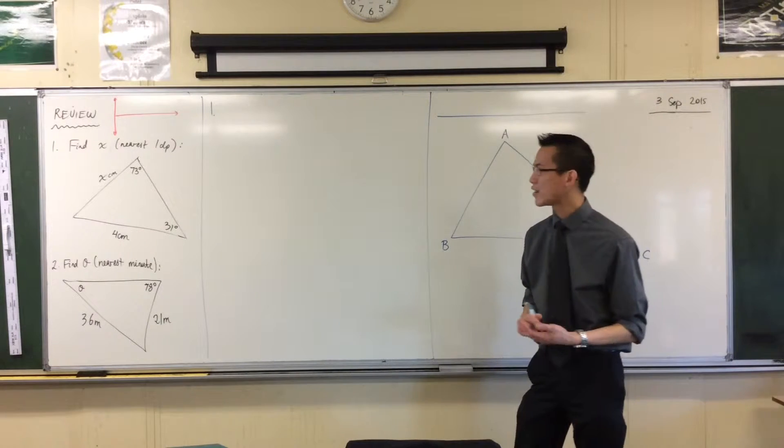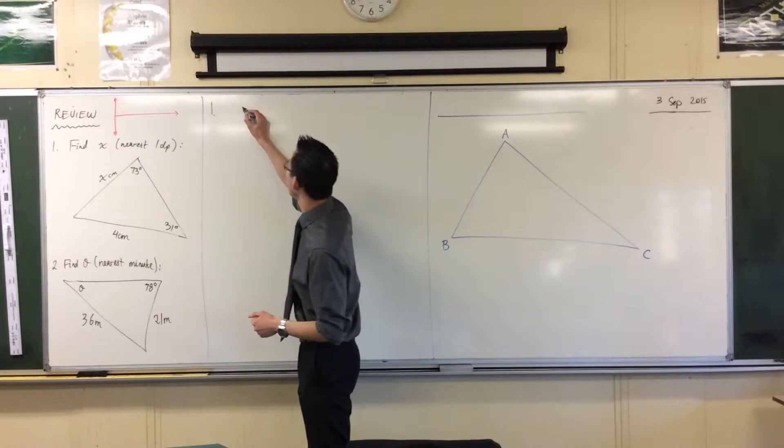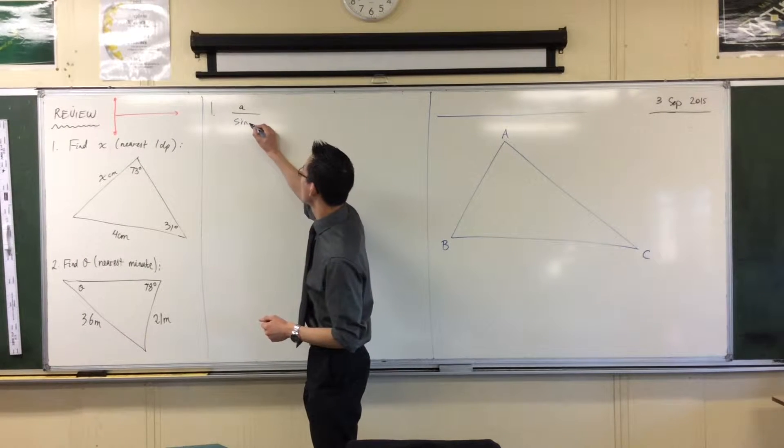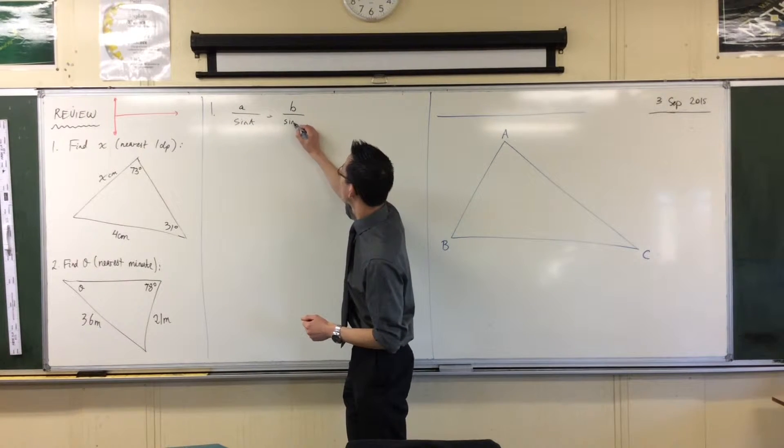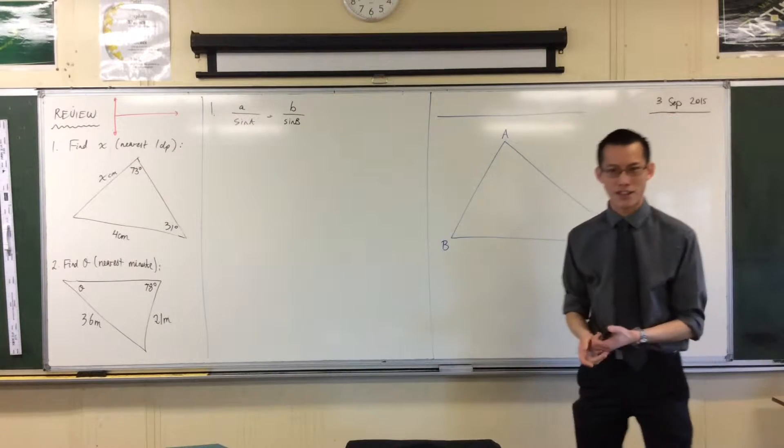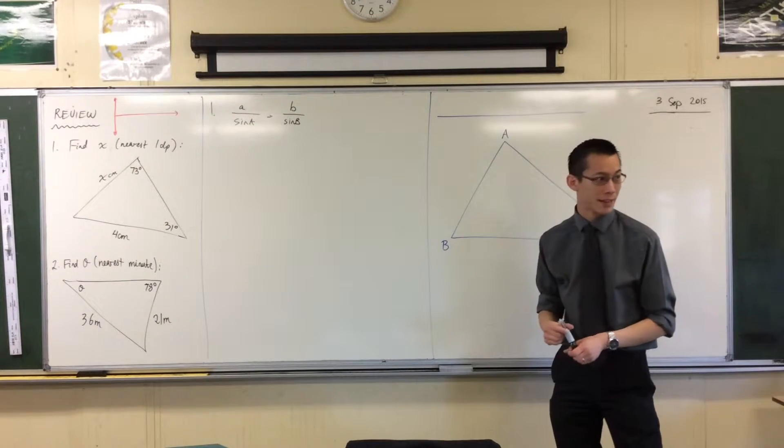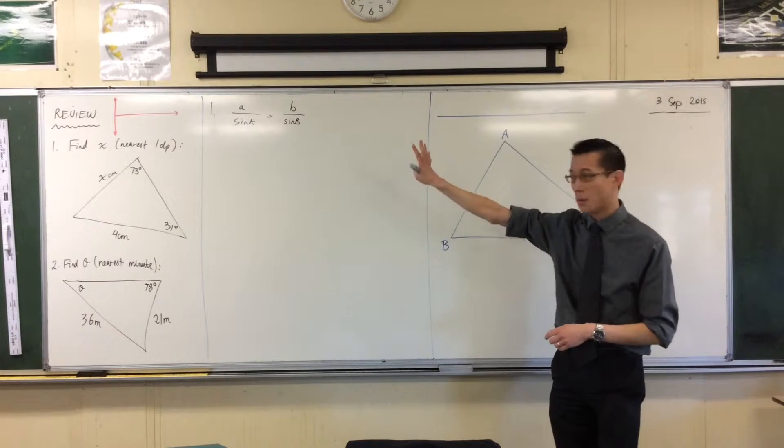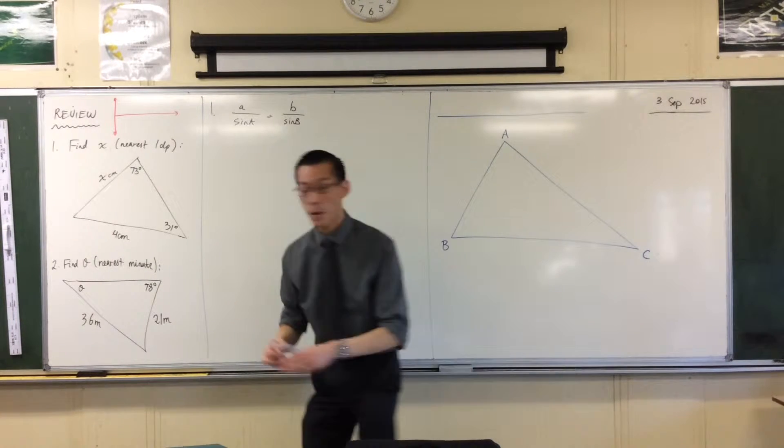So I'm finding a side, so I'm going to write my sine rule in this form. I put the side on the top because then I just have less rearranging to do on my subsequent lines. Once I've got my formula down, I'm fitting things into the right spots.